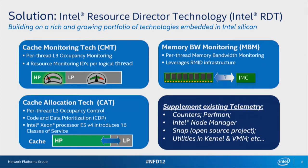Cache monitoring technology allows you at an individual process level to say: every time you pull something into the cache, count a little bucket. Even when you're not running, all those cache lines you pulled in were tagged with your particular billing ID. As they get pushed out, you decrement that little counter. So you can come along and say, let's start monitoring this process — we can see all the cache allocations it's done, how much is being pushed out, and take a snapshot: he is currently using 12 megabytes of the last level cache.